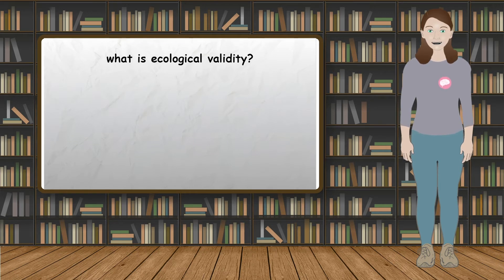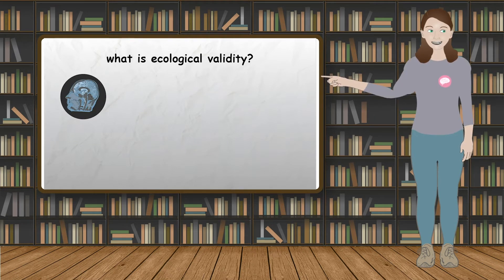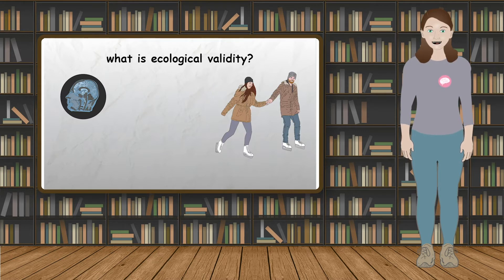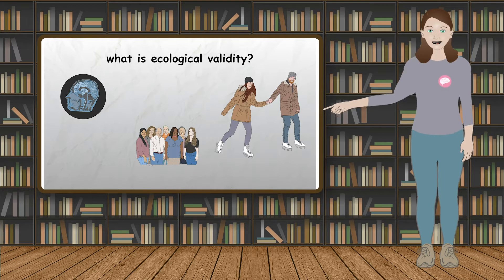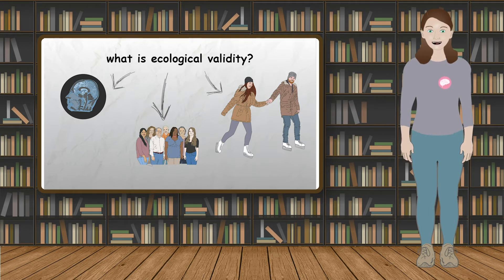Ecological validity refers to the extent that a situation or task within a psychological study can be generalized beyond the present situation. Using an environment which is natural or normal to the participant is likely to be higher in ecological validity and is more likely to obtain results that represent everyday life, and in that way are more generalizable to the target population and to other settings.